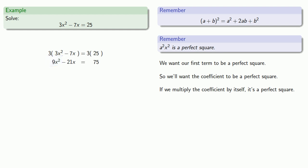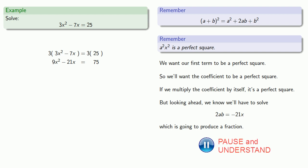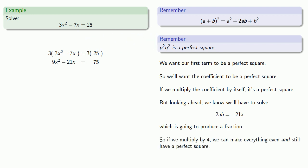Now it helps to look ahead a little bit. We'll want the middle term to be 2ab. So looking ahead, we'll know we'll have to solve 2ab = -21x, but that's going to produce a fraction because we're going to have to divide 21 by 2. But let's think about that a little bit more. If a²x² is a perfect square, that also means p²q² is a perfect square. If I multiply a perfect square by another perfect square, it's still a perfect square. And what this means is if we multiply everything by 4, we can make everything even and still have a perfect square. So let's also multiply by 4.